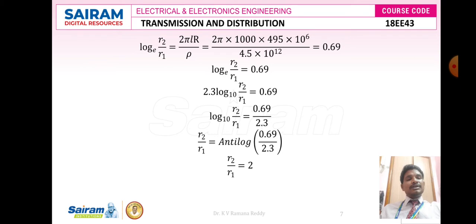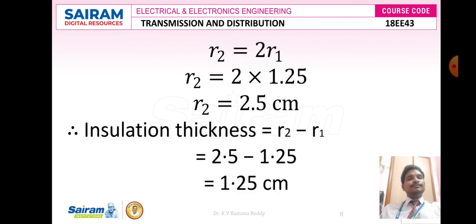Converting to base-10 logarithm: 2.3 × log_10(r2/r1) = 0.69, so log_10(r2/r1) = 0.69/2.3. Taking the antilog, r2/r1 = 2. Therefore r2 = 2 × r1 = 2 × 1.25 = 2.5 centimeter. The insulation thickness = r2 − r1 = 2.5 − 1.25 = 1.25 centimeter.